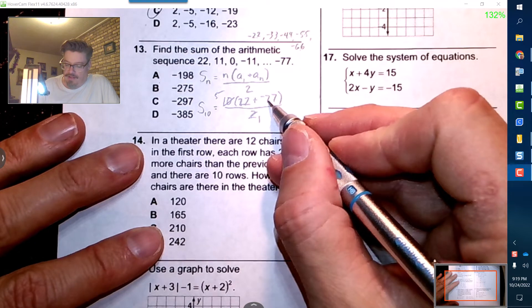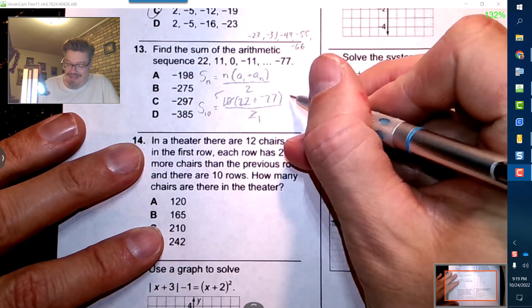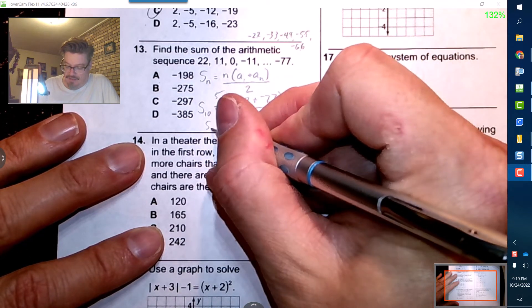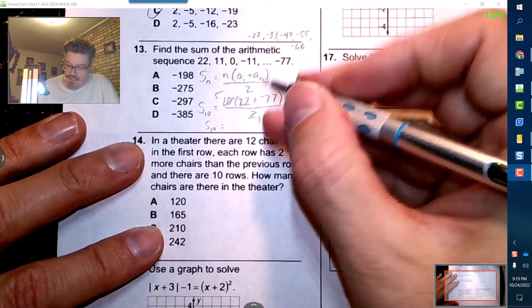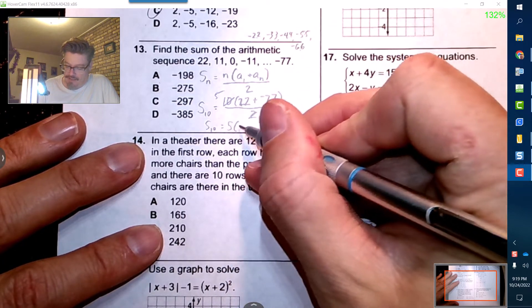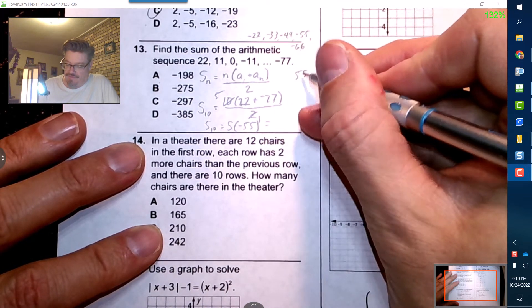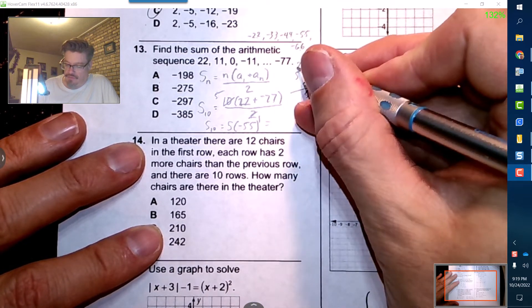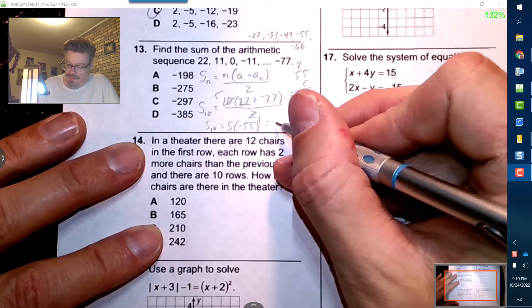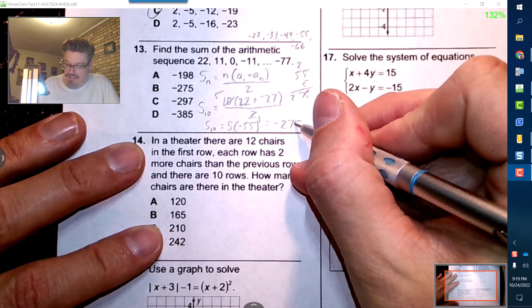This right here, adding that together, is negative 55. So the sum of these two is actually 5 times negative 55. 5 times negative 55, let's see, 2, that's 275, so it looks like it's negative 275.